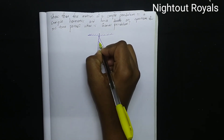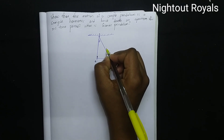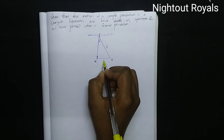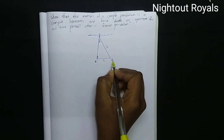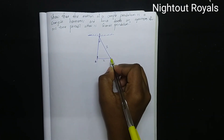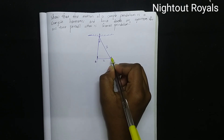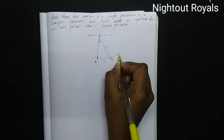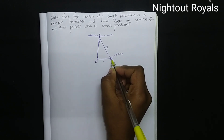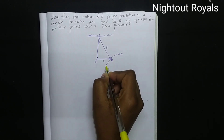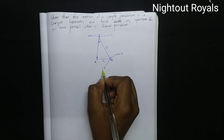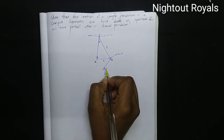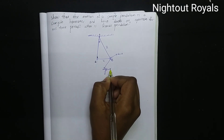This is the angle theta — this is the geometry: theta, L, x, and the bob.